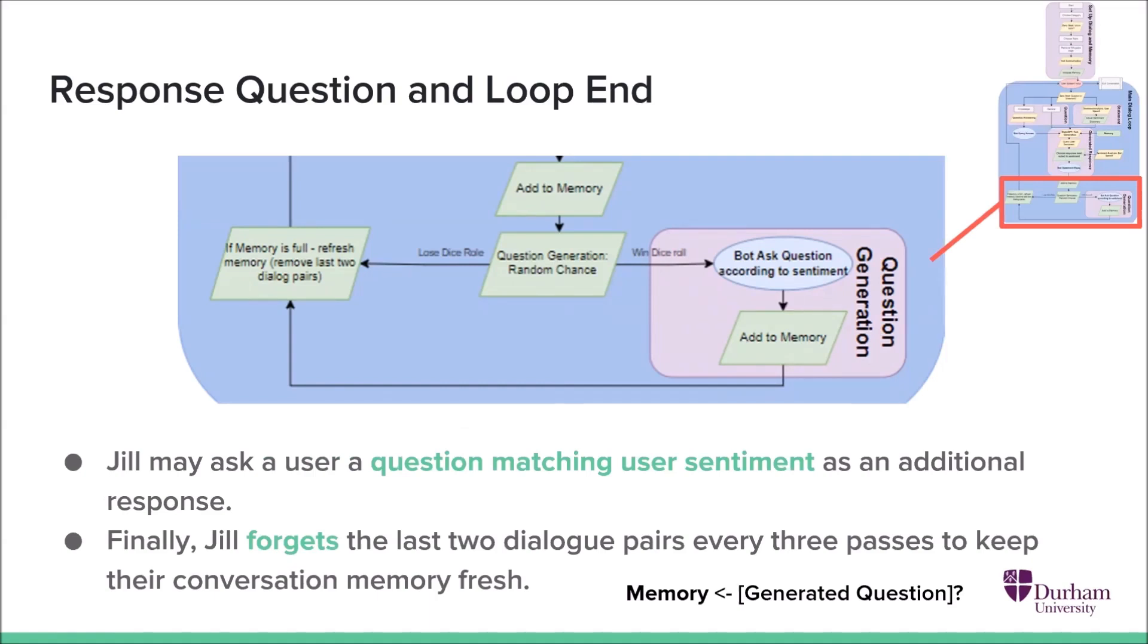Likewise, for negative, neutral is just tell me more about this, something like that. If the memory is full, we finally remove the last two dialogue pairs so Jill doesn't reference old conversation.